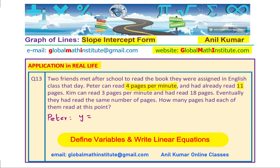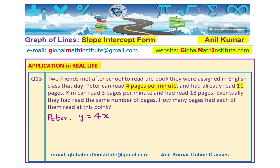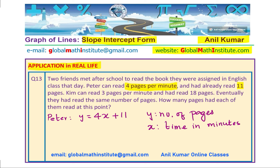y equals 4x plus 11, where x is time in minutes. He can read 4 pages per minute, and he has already read 11 pages. So at time zero, when time starts, 11 pages are already read. That is what it means for Peter.